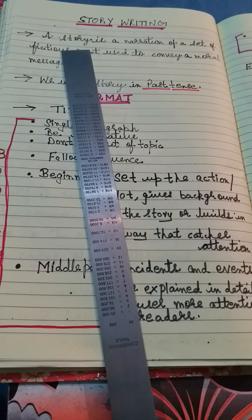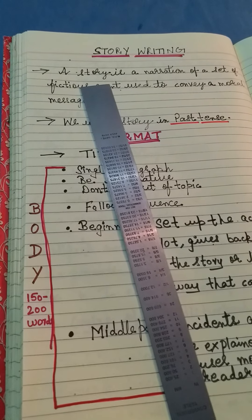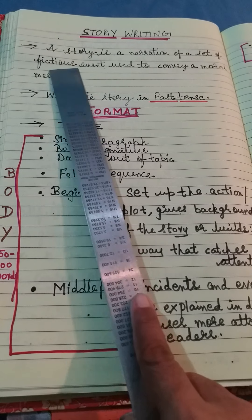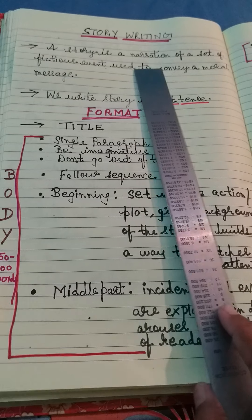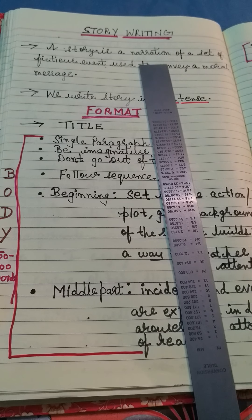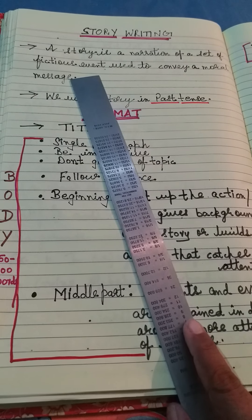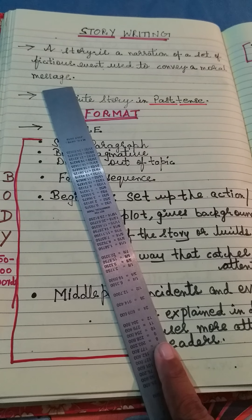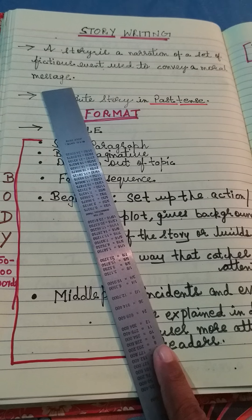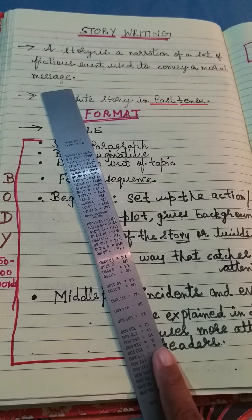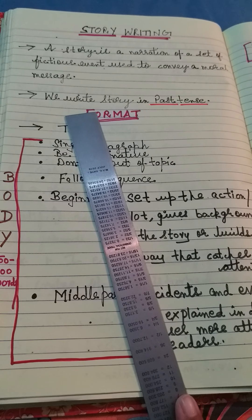A story is actually a narration — narration means to narrate — of a set of fictional events used to convey a moral message. Every story must have a moral lesson or moral value at the end.